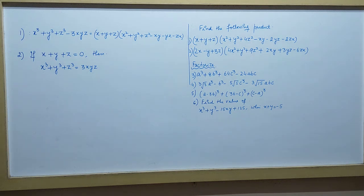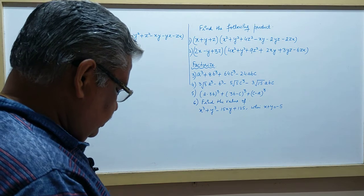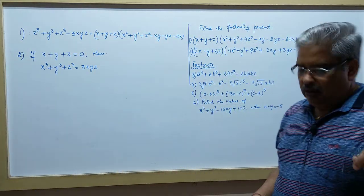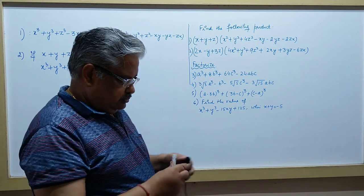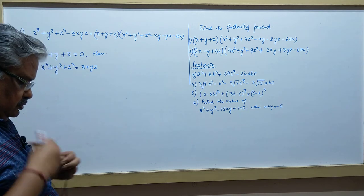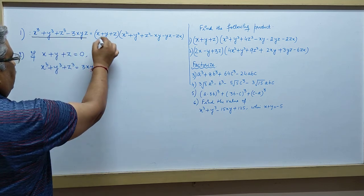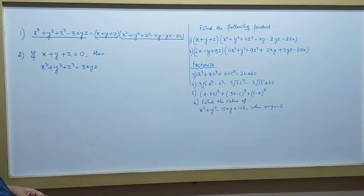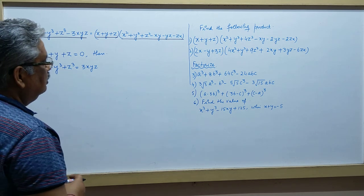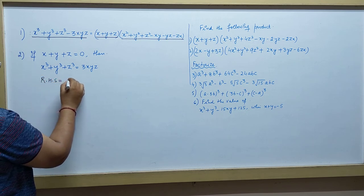Next cubic identity will be used — you have to remember these identities as well as the derivations. The identity is: x³ + y³ + z³ − 3xyz = (x + y + z)(x² + y² + z² − xy − zx − yz). How are we getting this? This is very simple. If you take the right hand side and multiply, this results...